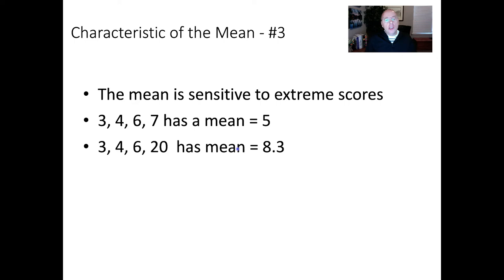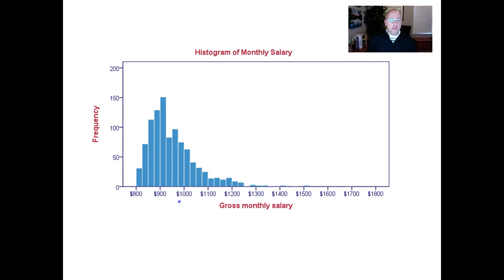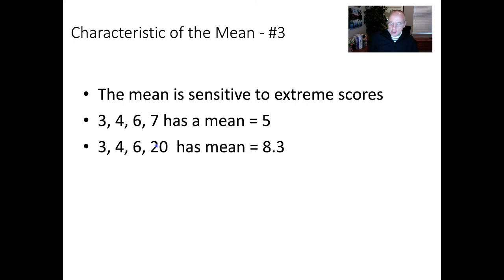For a lot of things, the median is almost always used — for example, salary data. With that positively skewed histogram we looked at earlier, we wouldn't use the average to represent the central tendency. We'd be better off using the median, or at least giving both the average and the median to consumers of the information. The better measure here is the median, because high salaries inflate the average. That's characteristic three: the mean is sensitive to extreme scores.